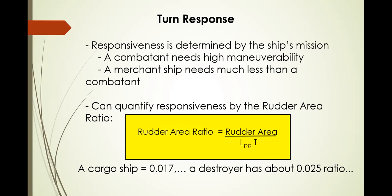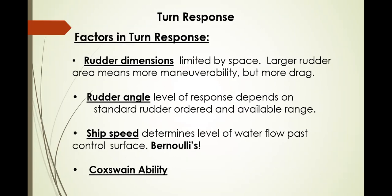Turn response: rudder area ratio equals rudder area divided by the length between perpendiculars. Factors in turn response include rudder dimensions, rudder angle, and ship speed — meaning the helmsman controls the swing ability or steerage of the ship. You have to reduce speed in order to reduce the Bernoulli effect. Rudder dimensions are ship-specific — the length, thickness, beam width of the rudder, and the maximum angle it can provide.